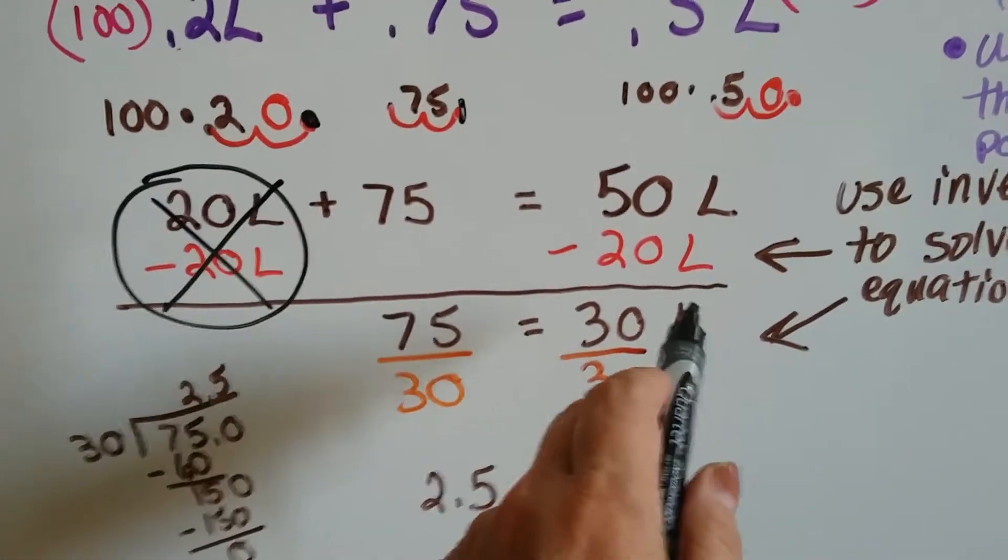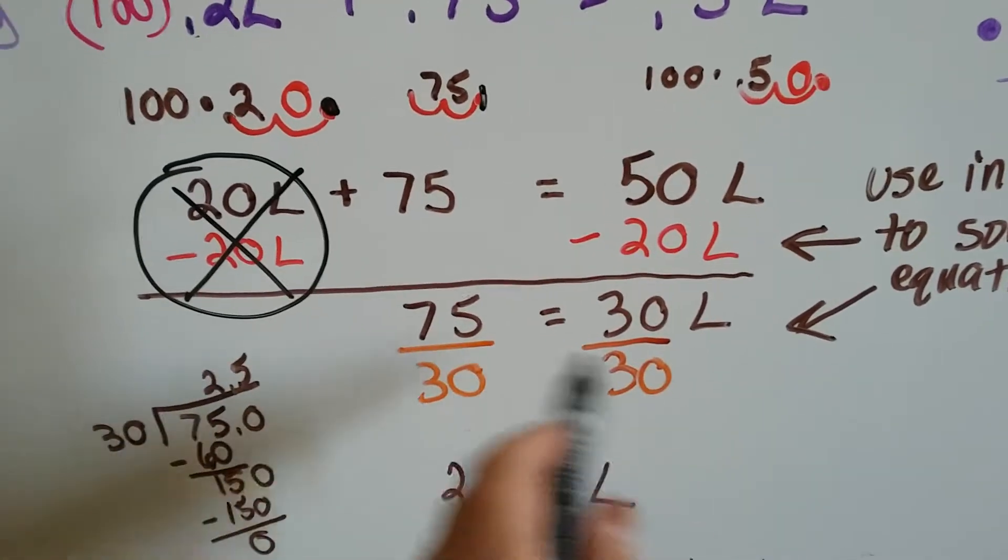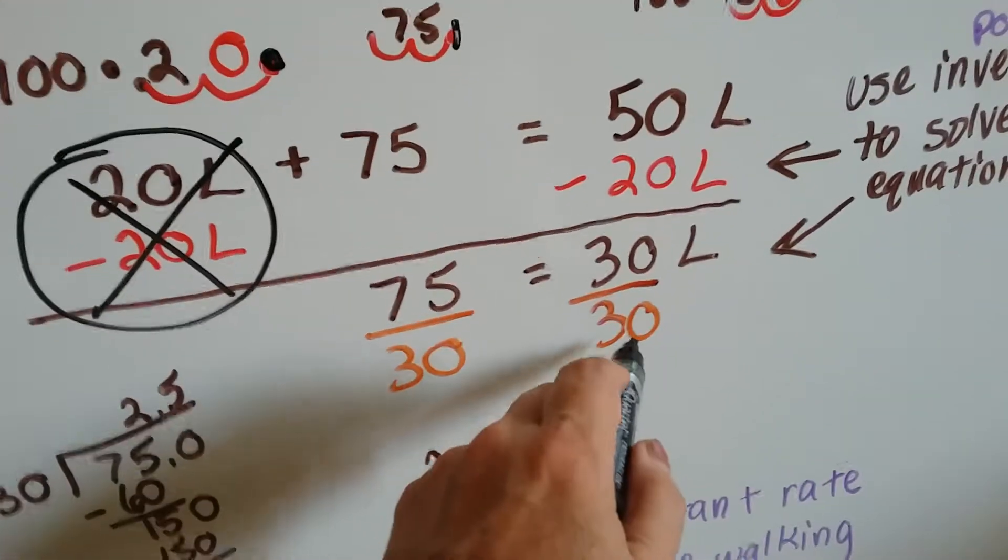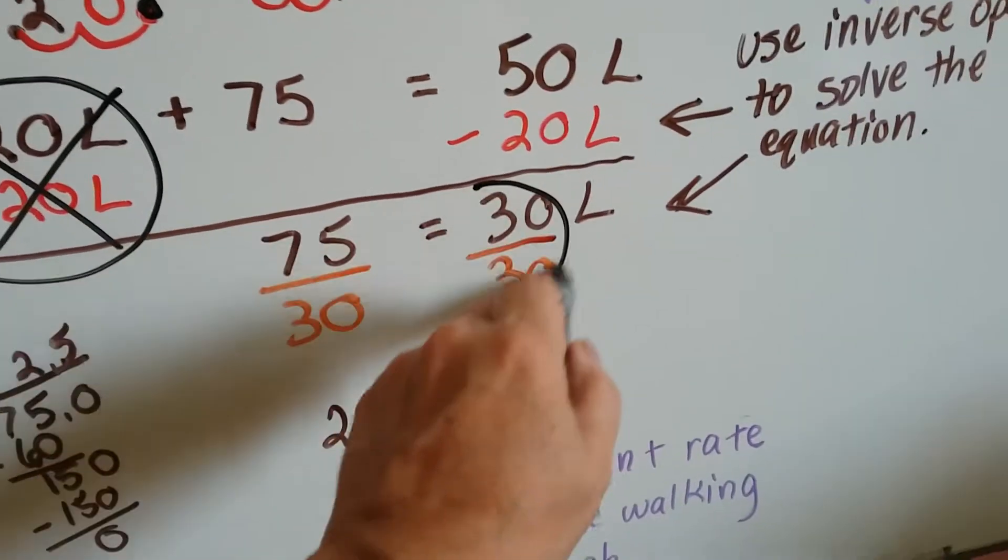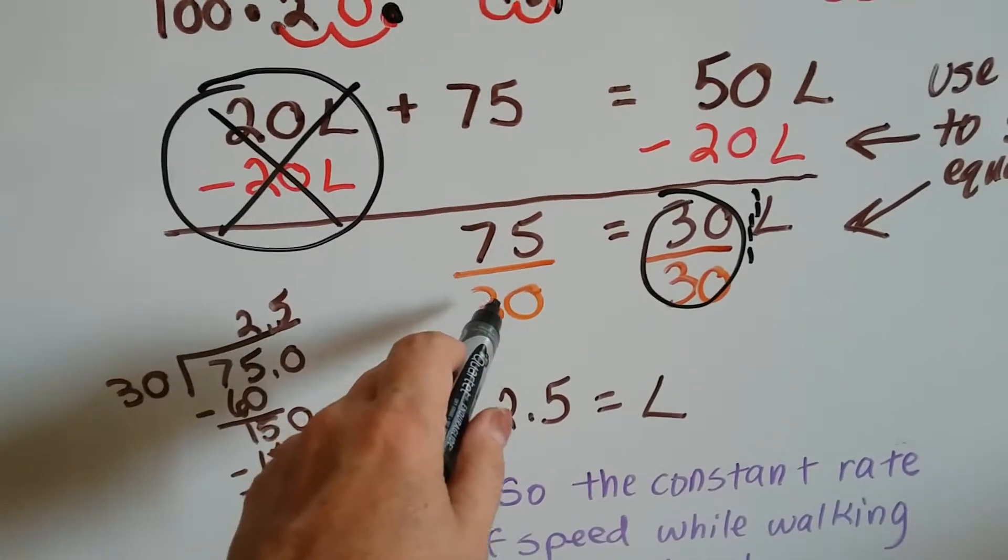And now, to isolate this L to one side, because 30L means multiplying, we're going to divide both sides by 30. And 30 divided by 30 is a 1, so we get our friend the invisible one.